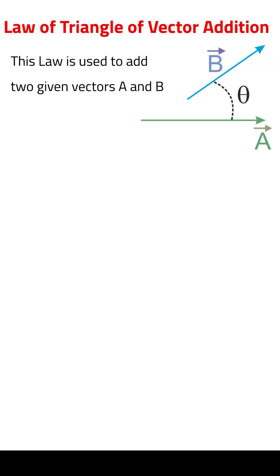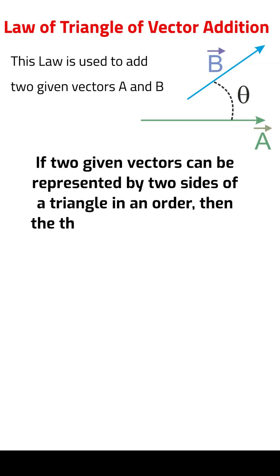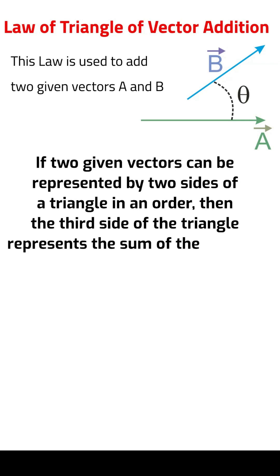This law says if two given vectors can be represented by two sides of a triangle in an order, then the third side of the triangle represents the sum of the vectors when taken in opposite order.